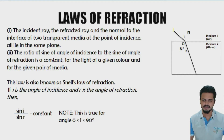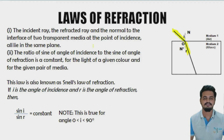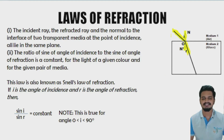Now let us move on to the laws of refraction. The first law states: the incident ray, the refracted ray, and the normal to the interface of two transparent materials at the point of incidence — this is the N-N dash line — all three lie in the same plane.